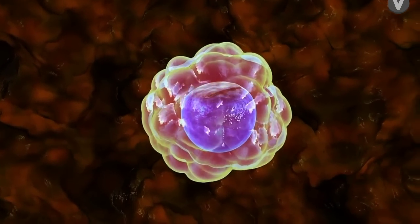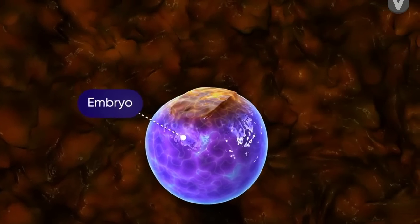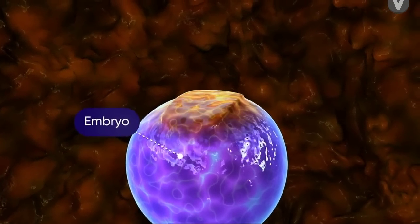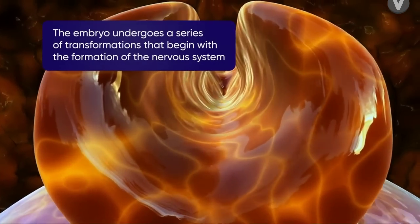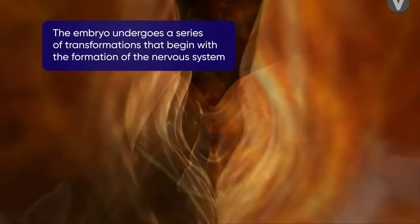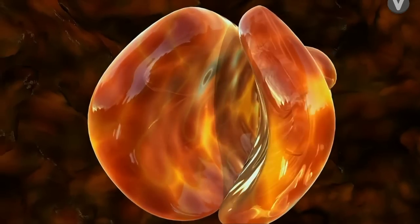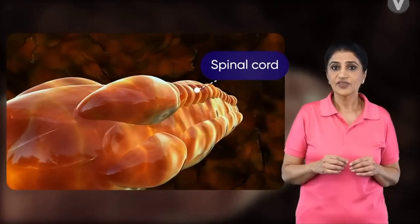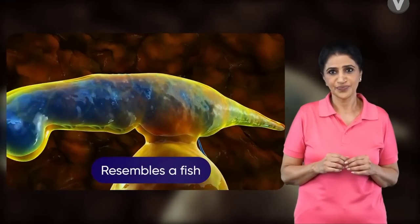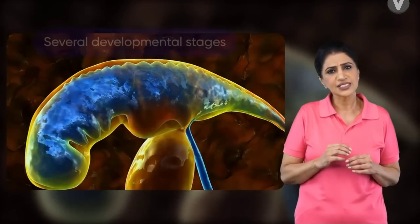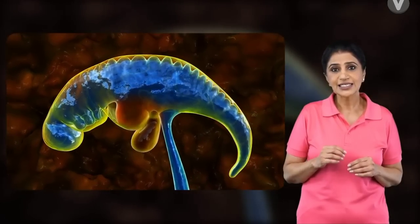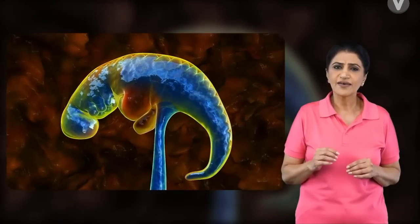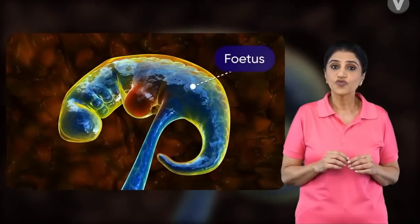The blastocyst gradually forms an embryo. A few days later, the embryo has grown considerably and shows the plate formed by the embryoblast. It goes through an amazing series of transformations, beginning with the formation of the nervous system, and continues with the formation of the spinal cord. During this time, the embryo is curled up and it resembles a fish. The human embryo undergoes several developmental stages — it even has a tail. In this short time, the single-celled egg evolves into several million perfectly organized cells, which forms the fetus.